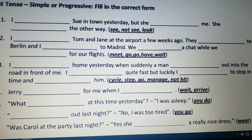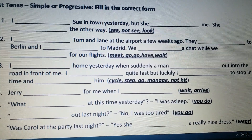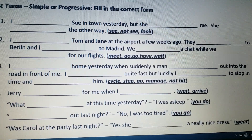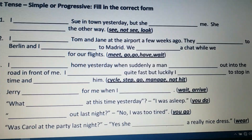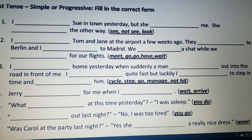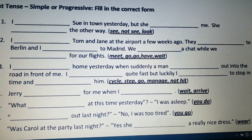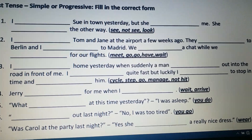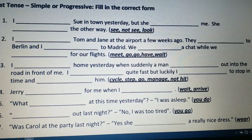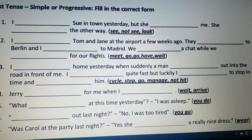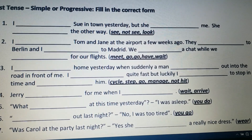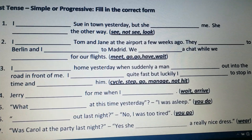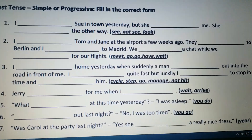Then: 'We ___ a chat while we ___ for our flights.' For the first blank, the action was complete and the verb is 'have'; past form of 'have' is 'had': 'We had a chat.' For the second blank, the action was going on, so we use past continuous tense — also known as past progressive: 'while we were waiting for our flights.'